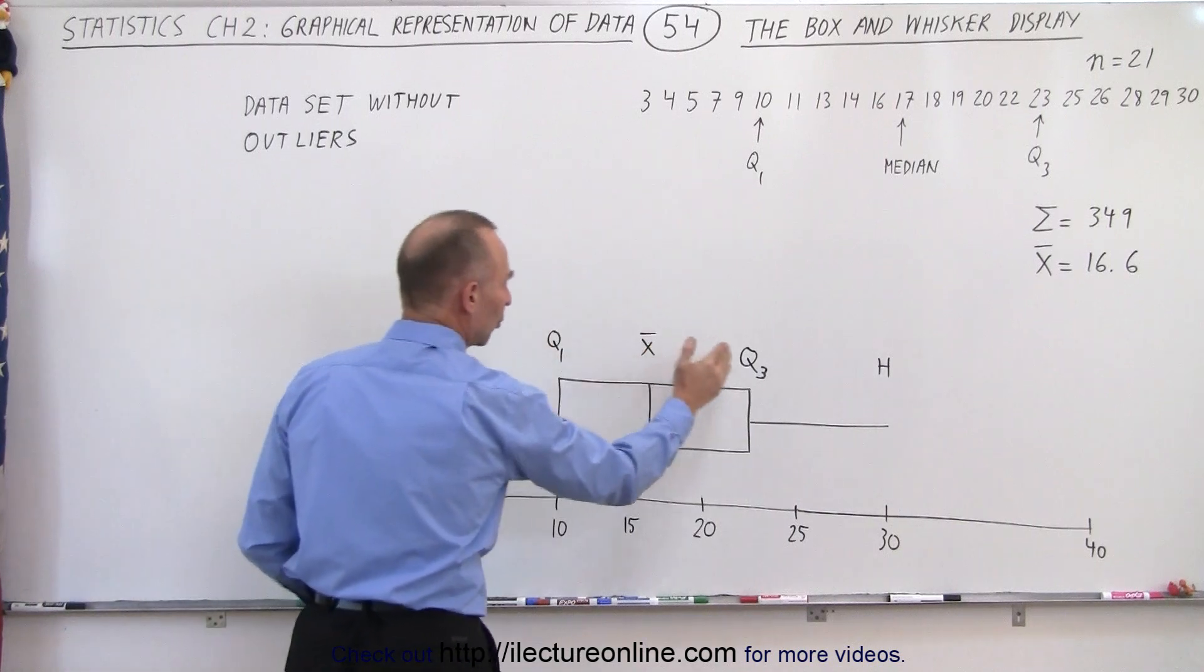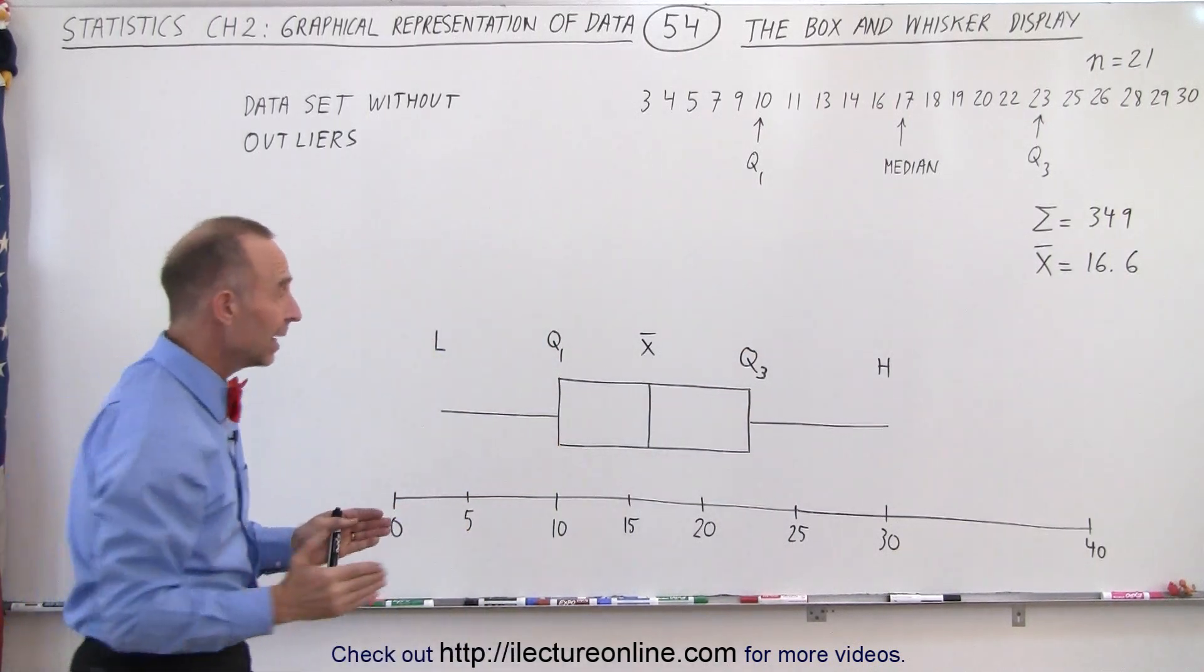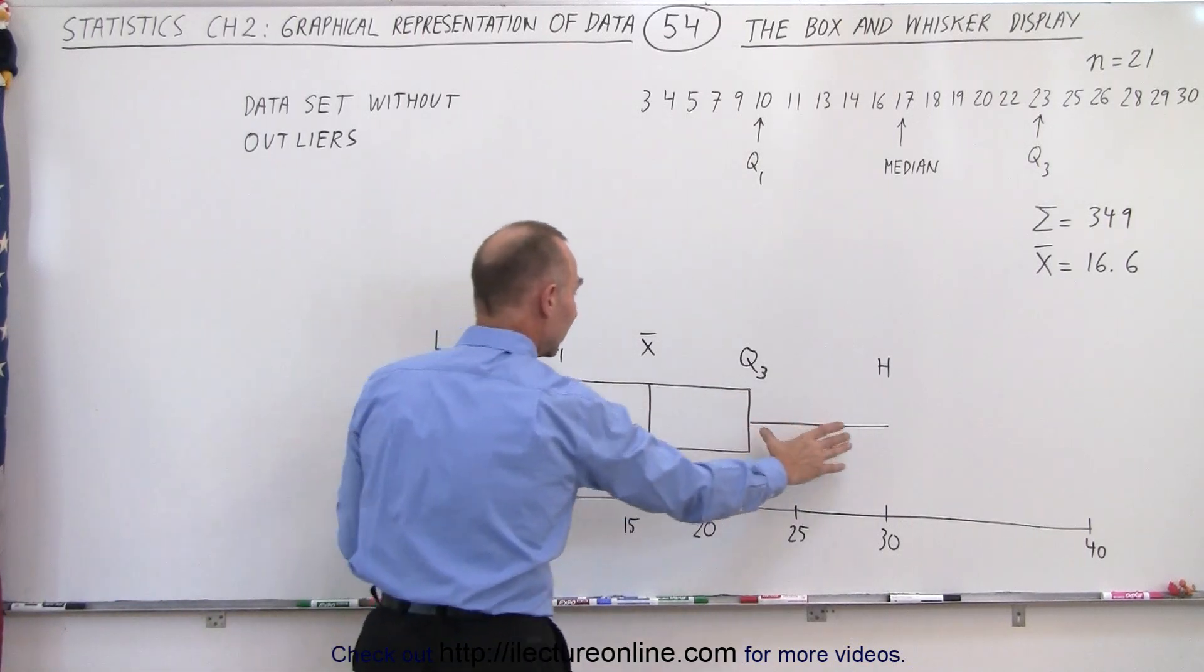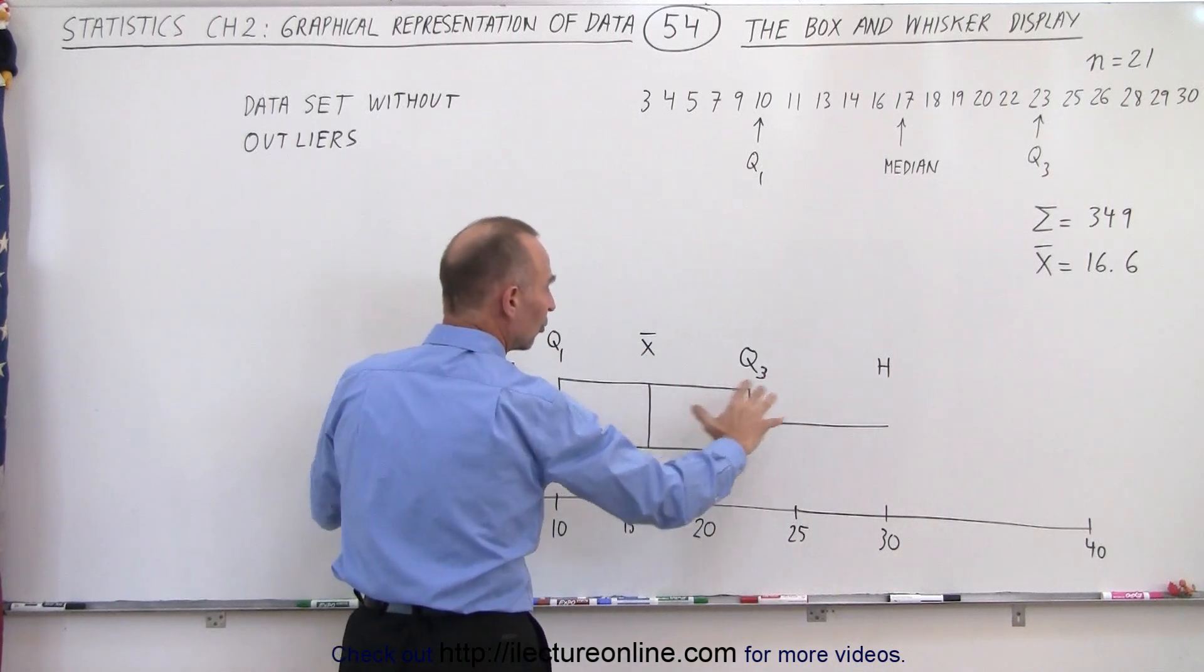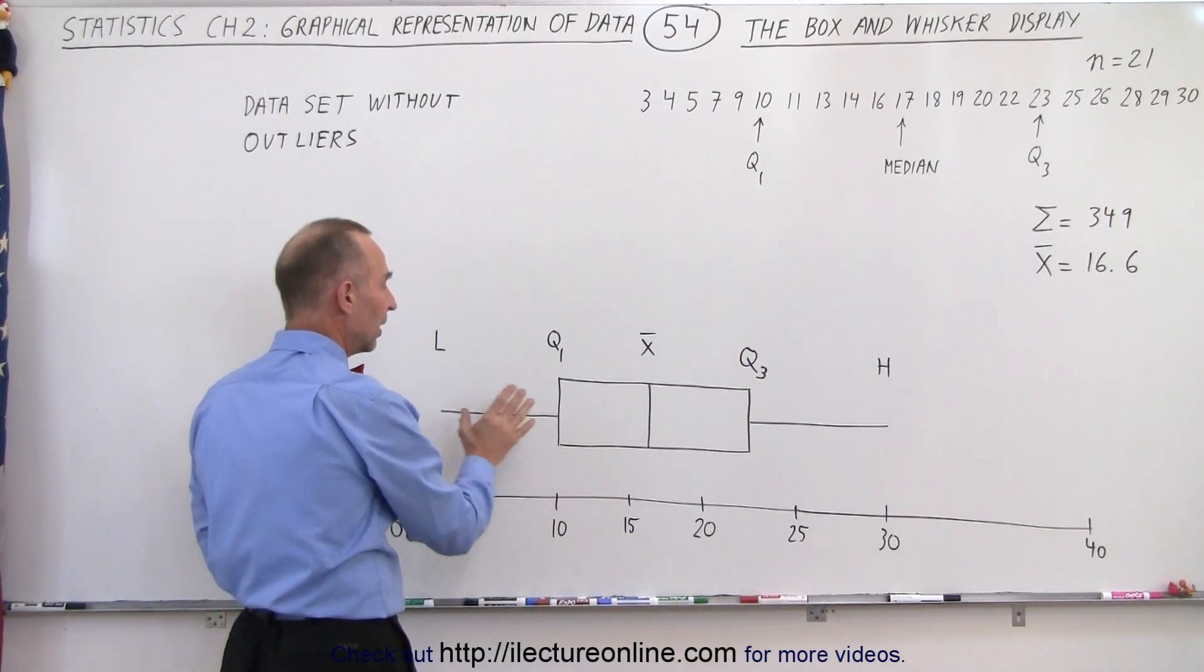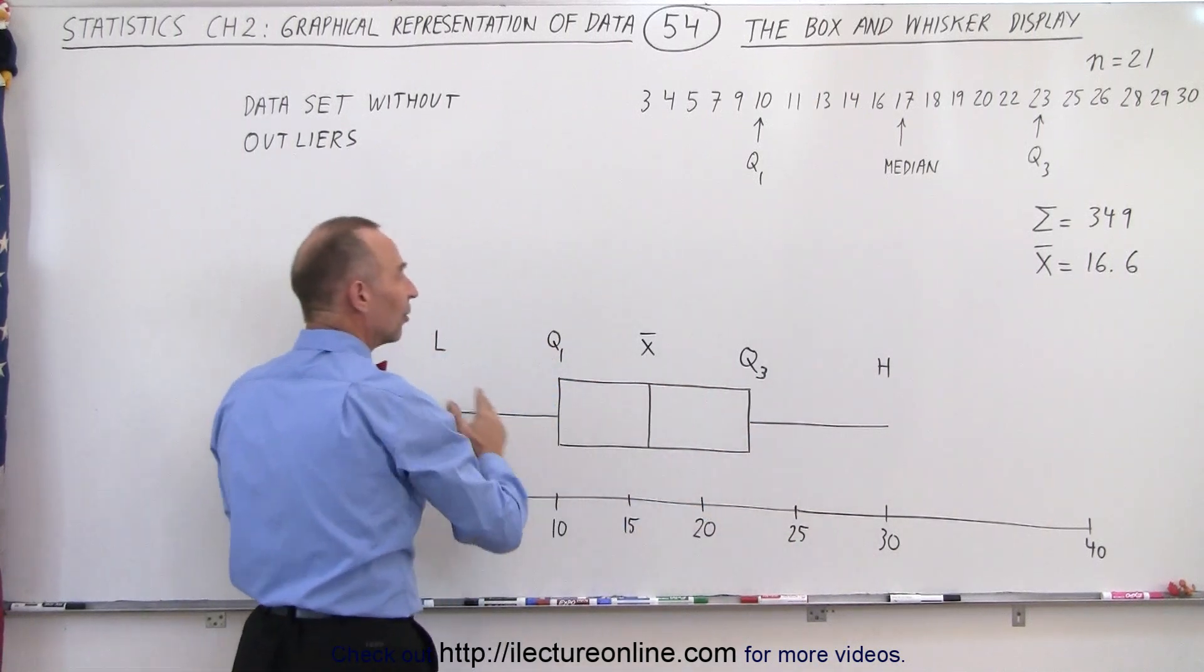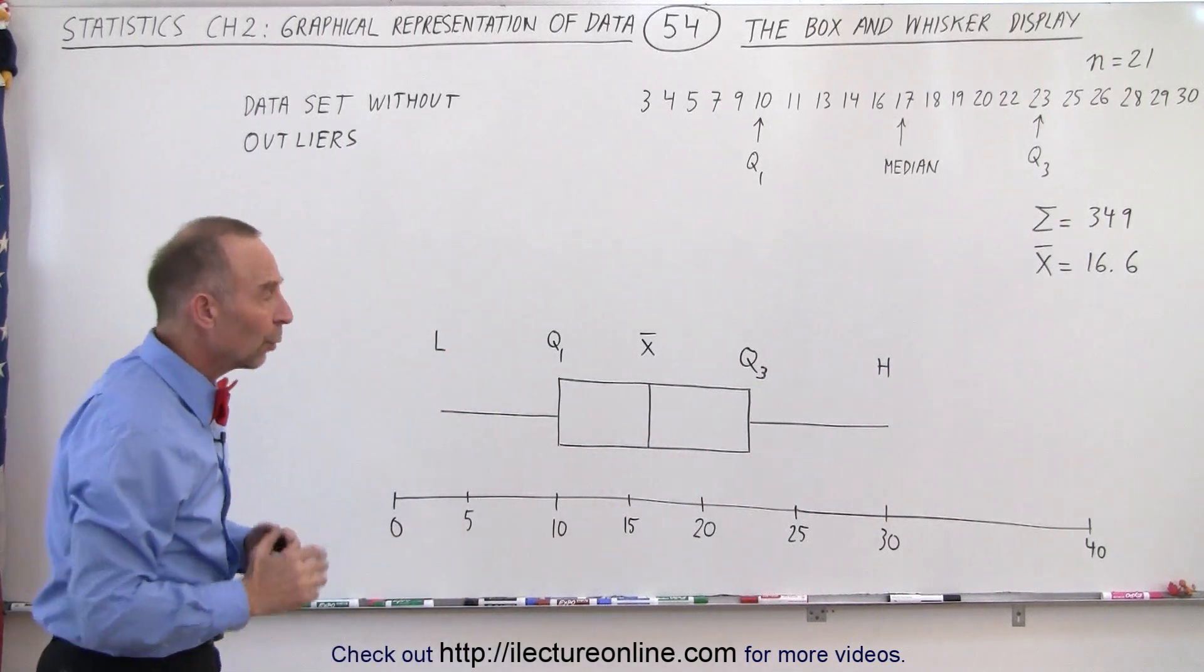The first quartile and the third quartile give those values of 10 and 23, meaning that half the data falls within that set, and you can see that the other half of the data falls out here, and that the distribution looks kind of like a normal distribution. It has about the same range on both sides of the box, so that you can see that there tends to be a typical distribution of data within this range.